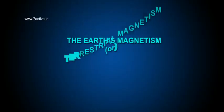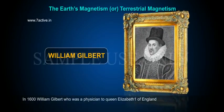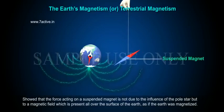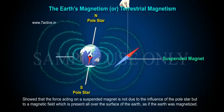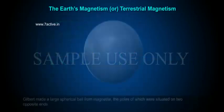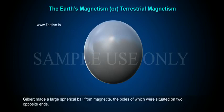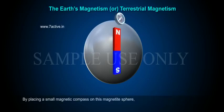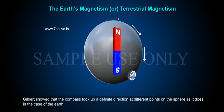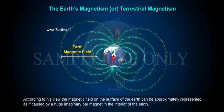The earth's magnetism, or terrestrial magnetism: in 1600, William Gilbert, who was a physician to Queen Elizabeth I of England, showed that the force acting on a suspended magnet is not due to the influence of the pole star, but to a magnetic field present all over the surface of the earth, as if the earth was magnetized. Gilbert made a large spherical ball from magnetite, the poles of which were situated on two opposite ends. By placing a small magnetic compass on this magnetite sphere, Gilbert showed that the compass took up a definite direction at different points on the sphere, as it does in the case of the earth.